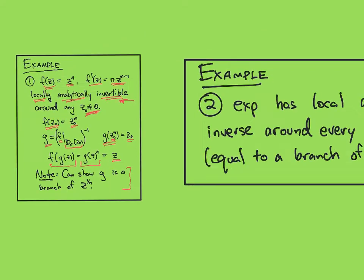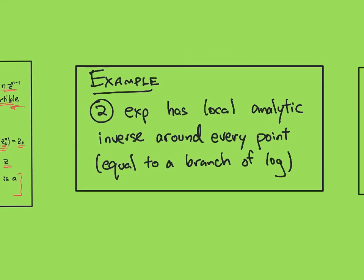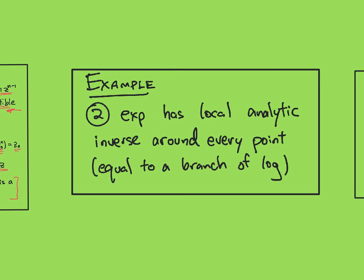Our next example is just the exponential. There's not too much to say here, but this ties into stuff we've already noticed. So e to the z, its derivative is itself, and it's always not zero.